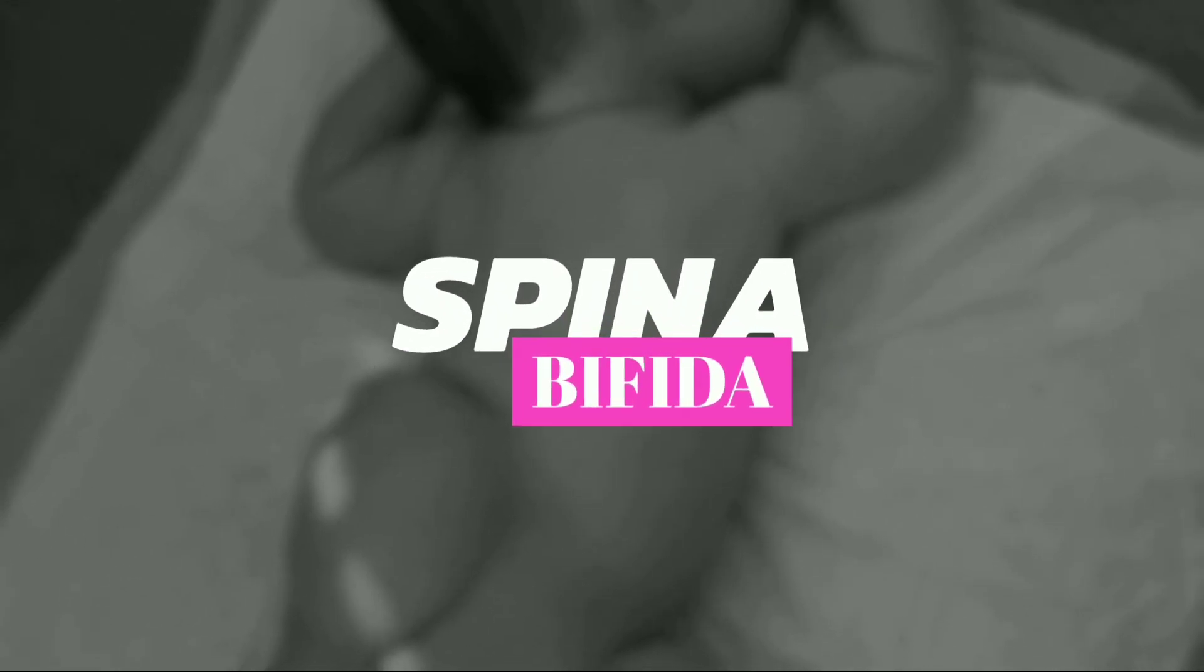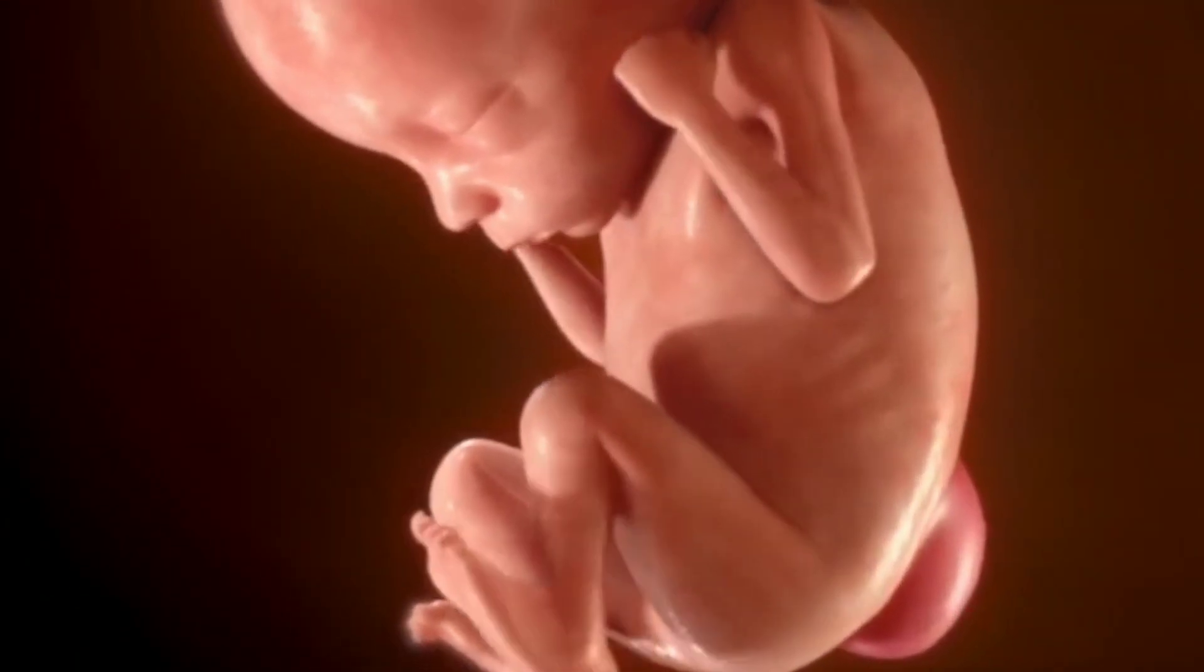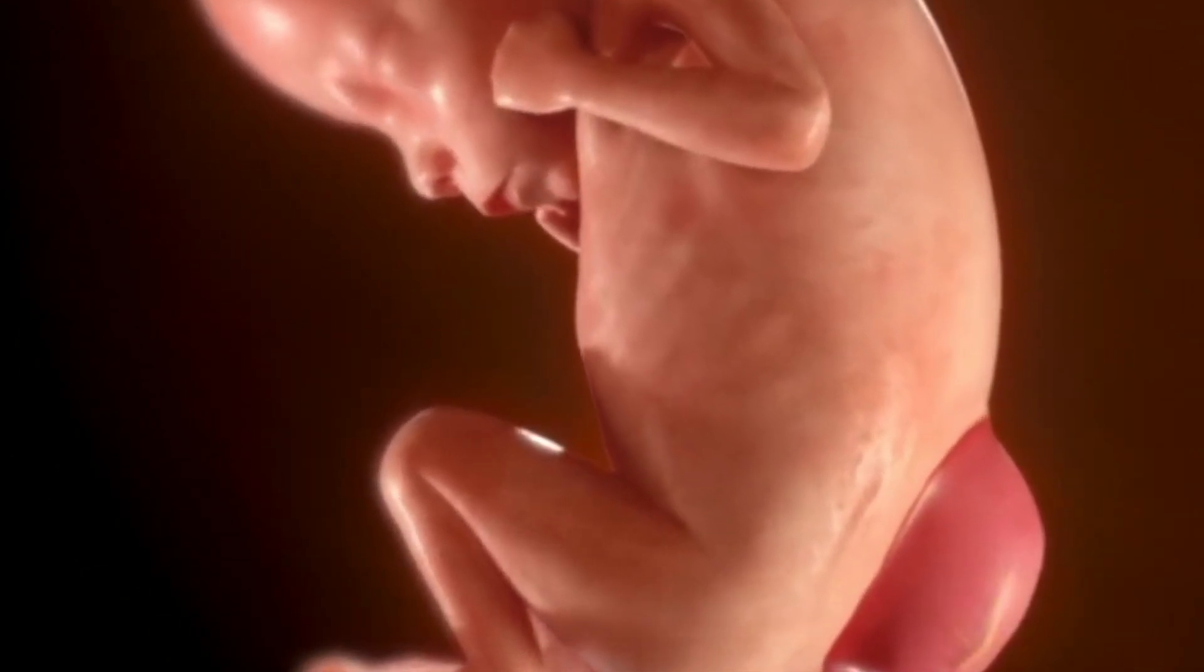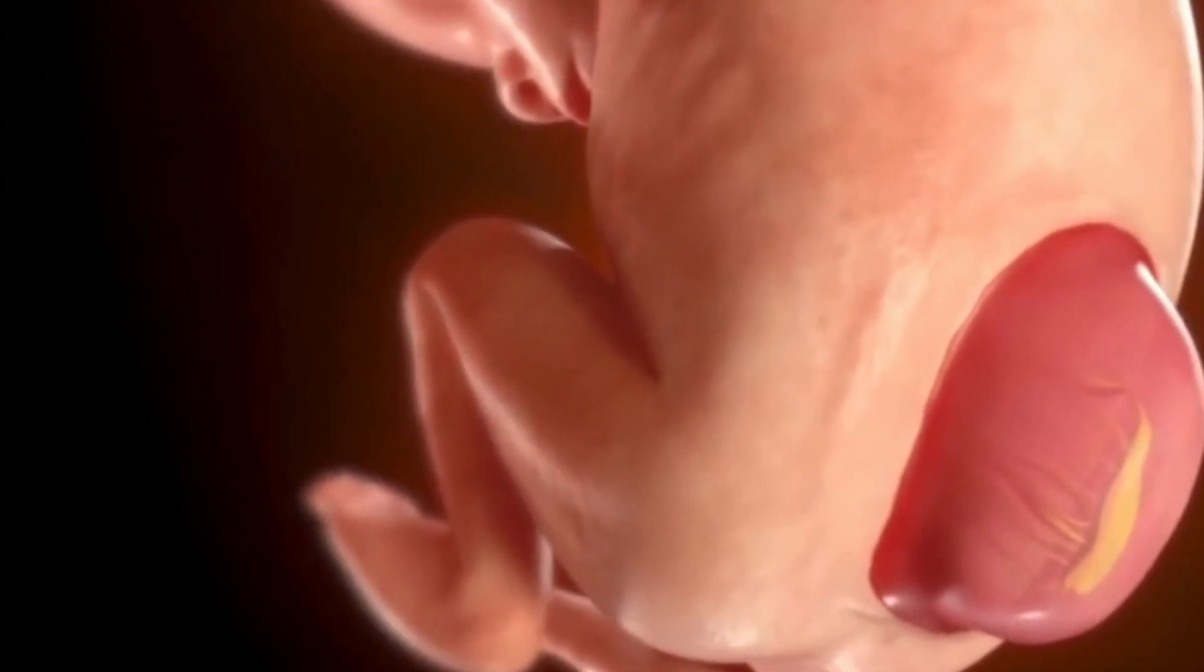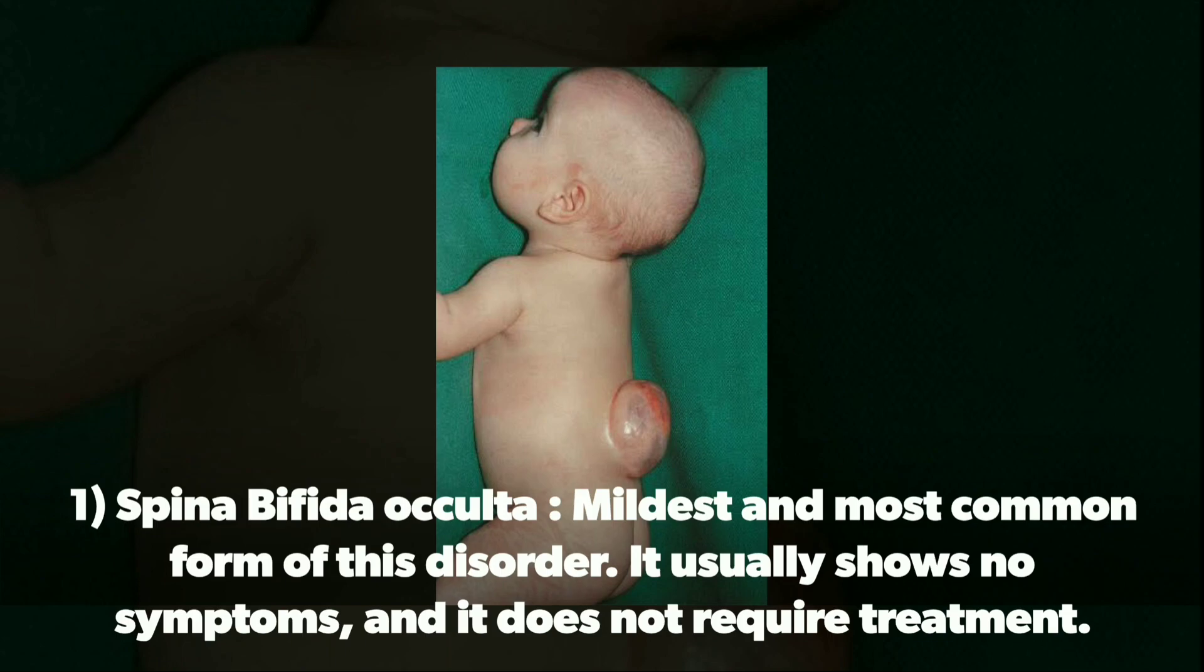Spina bifida occurs if the posterior or caudal neuropore doesn't close by the 28th intrauterine day, which leads to incomplete development of the fetus's spine. It's important to know that the condition varies widely in degree. Most cases are so mild they have no symptoms and don't need treatment. This occurs with spina bifida occulta, or hidden spina bifida.